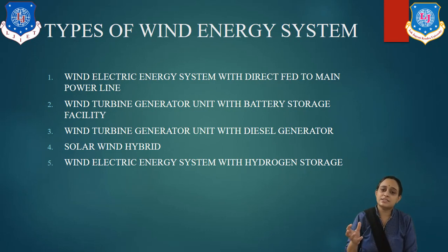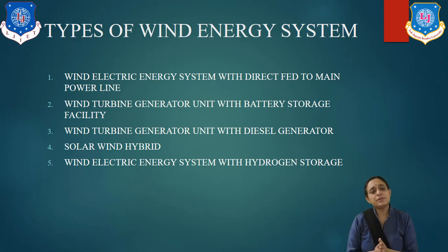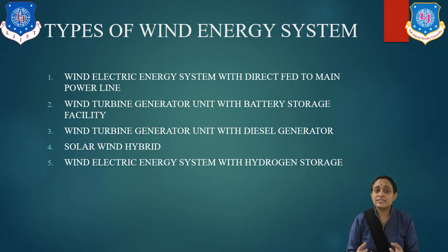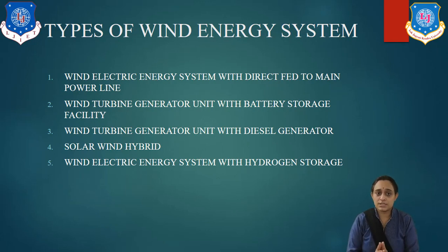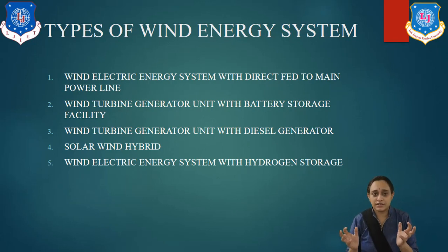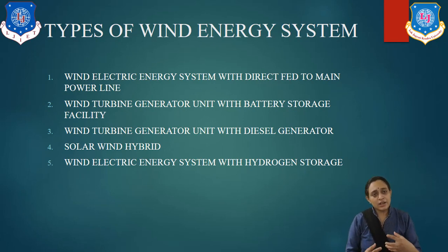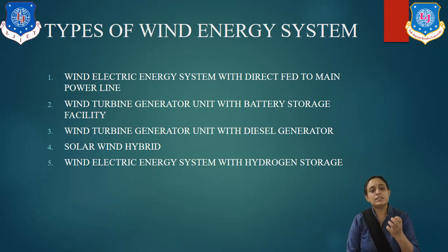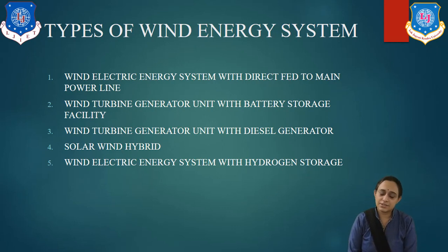Fifth: wind electrical energy system with hydrogen storage. In this system, the windmill generates electrical energy. This energy is used for the electrolysis process to divide hydrogen and oxygen content, which are stored in a storage tank. The hydrogen can then be used as fuel in a fuel cell and also in a gas turbine to generate electrical energy.